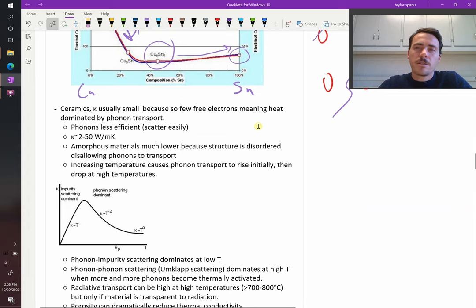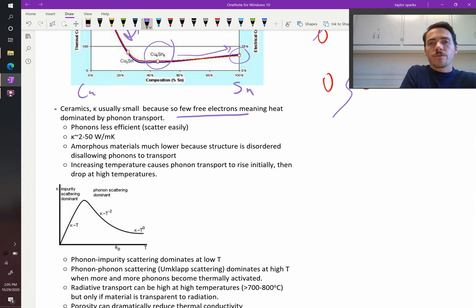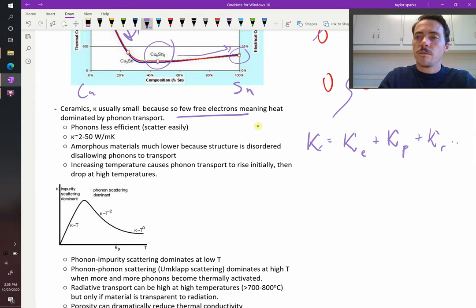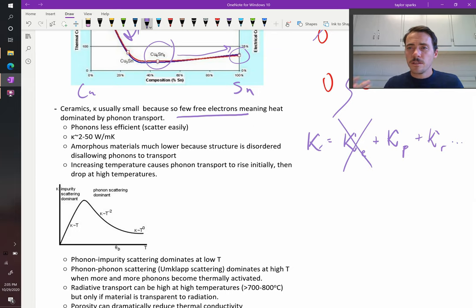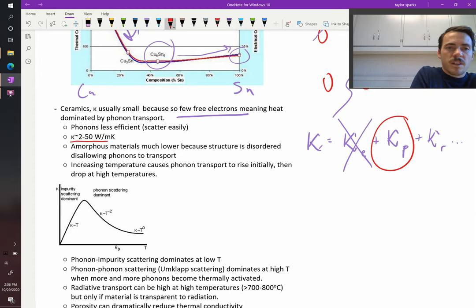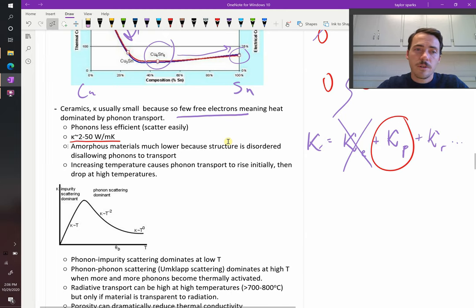What about ceramics? Ceramics usually have small thermal conductivity because there are very few free electrons. If you get rid of one category, you'd expect lower thermal conductivity. It's typically lower, dominated by phonon transport. Lattice vibrations in ceramics are the key. If they can be scattered, it's going to be a less efficient conductor. Typical values for thermal conductivity in ceramics are 2 to 50 watts per meter Kelvin. A lot of oxides are pretty low, 2 to 10, probably even less. It's rare to find ceramics with higher values, but they do exist.